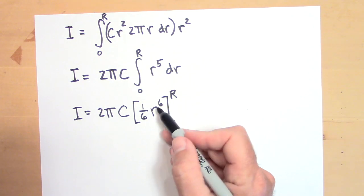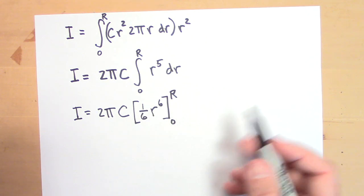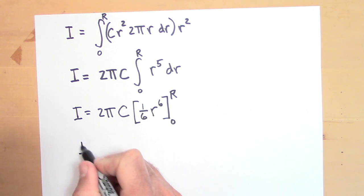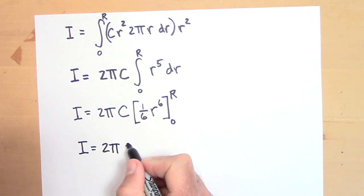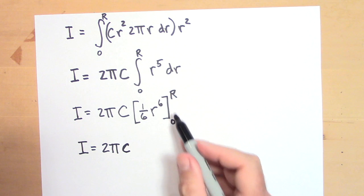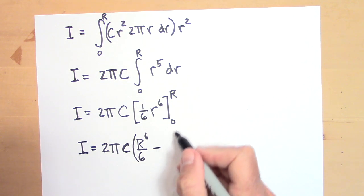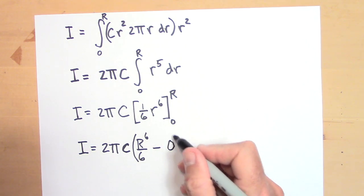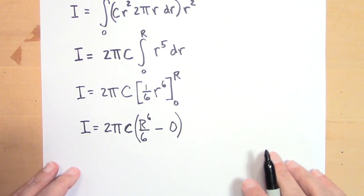Okay. Let's put in the R first. And then when we put in the zero, the whole term is going to disappear. So I'm going to get that I is equal to two pi C. And then this is going to be r to the sixth over six minus when I put in the zero, I get zero.